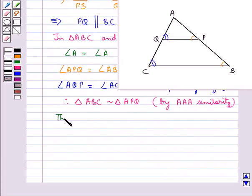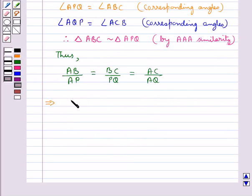From the similarity, we have AB upon AP is equal to BC upon PQ, which is equal to AC upon AQ. This AB is equal to AP plus PB upon AP, equal to BC upon PQ, equal to AC. AC is equal to AQ plus QC upon AQ.